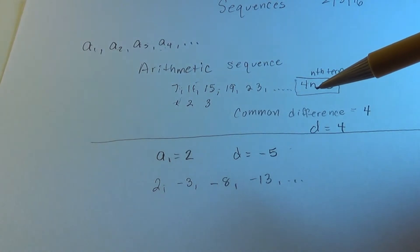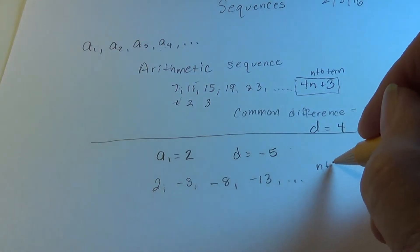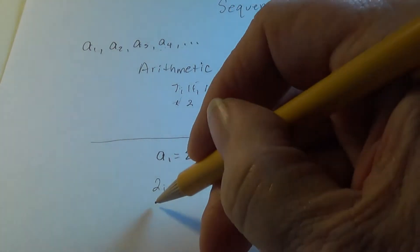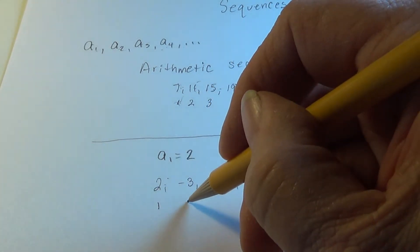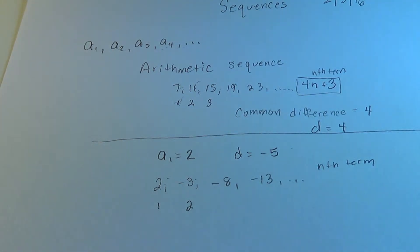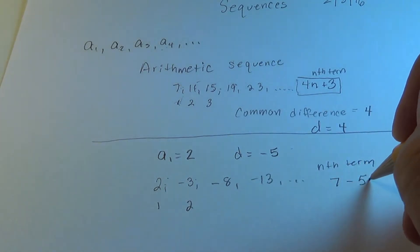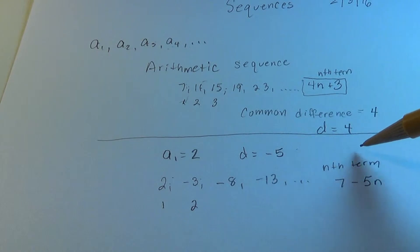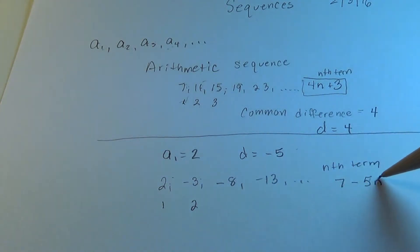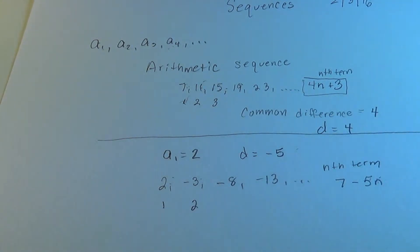What would be the generating function or nth term for this sequence? What rule applied to 1 gives 2, and the same rule applied to 2 gives negative 3? The answer is 7 minus 5n. When n equals 1, we get 7 minus 5, which is 2. When n equals 2, we get 7 minus 10, which is negative 3. You can verify that the others work as well.